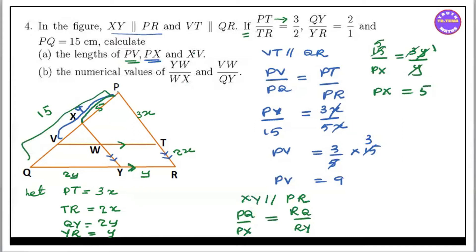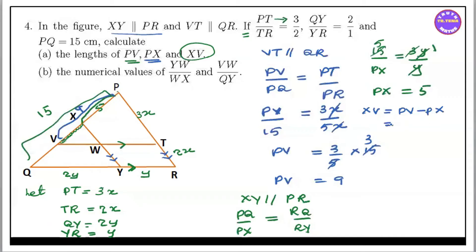PX equals 5. So we have XV. In this case, we have XV minus VX. 5 equal to — XV equals PX minus PV — XV equals 4.